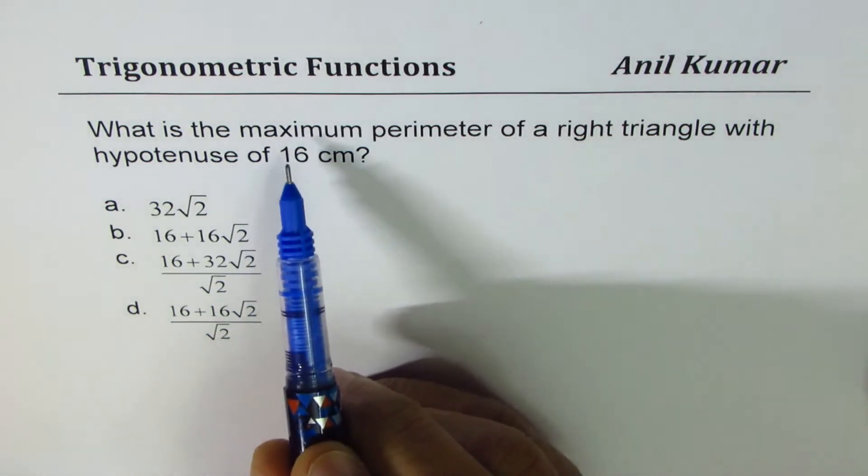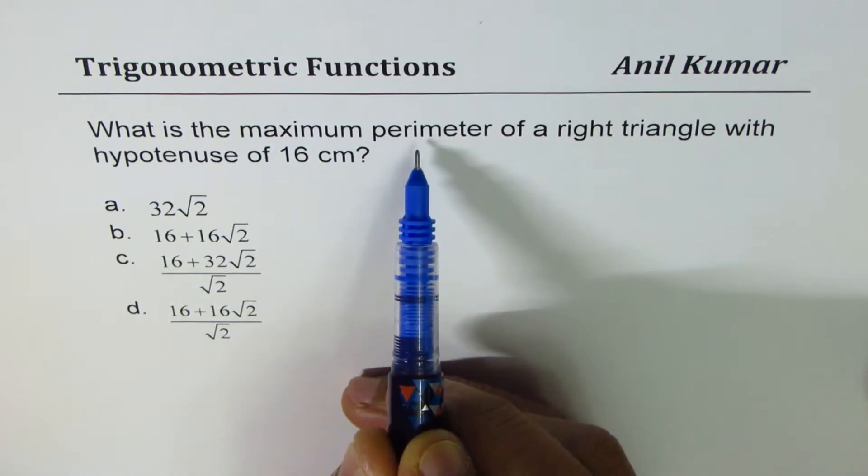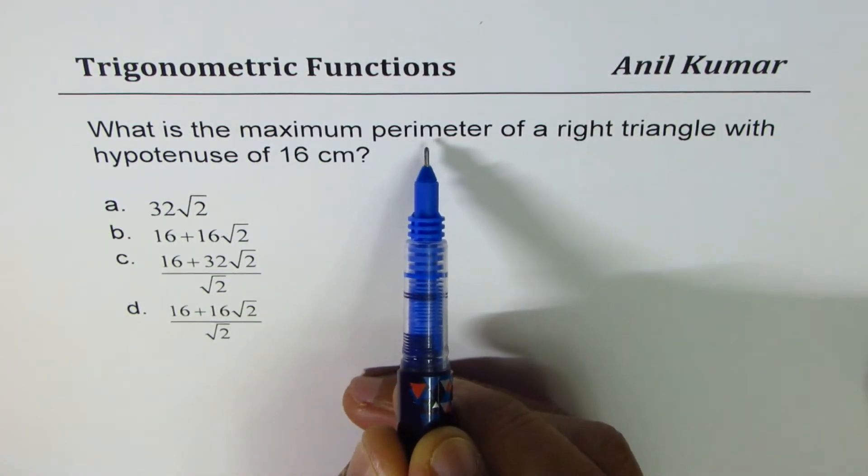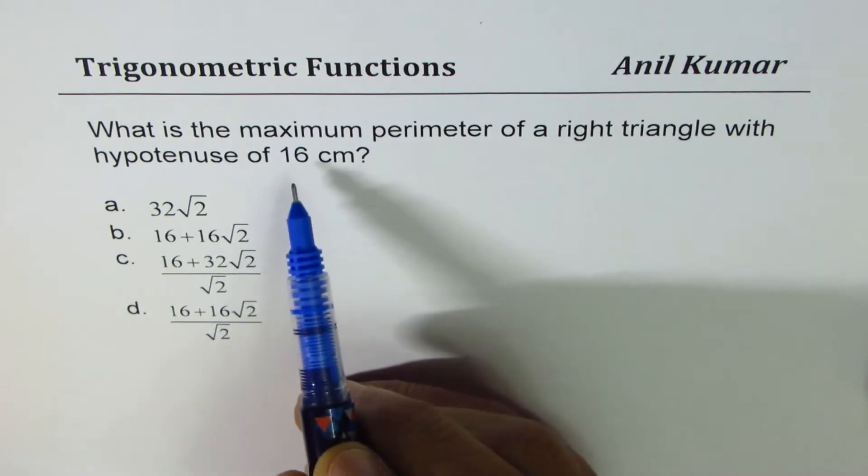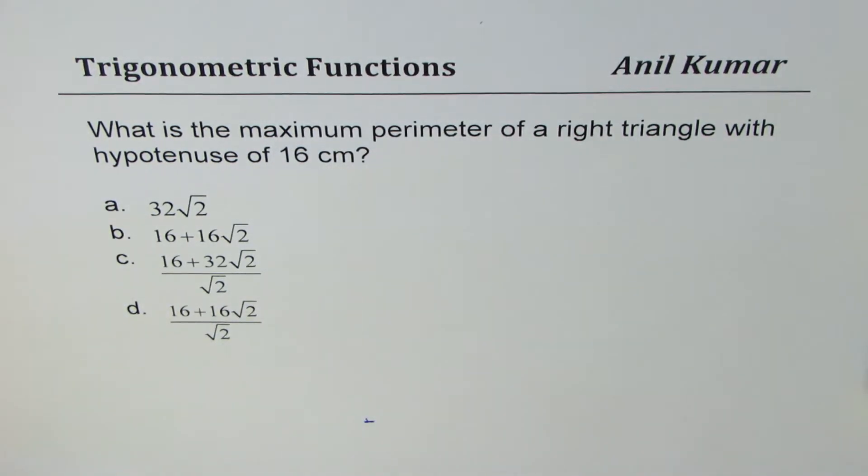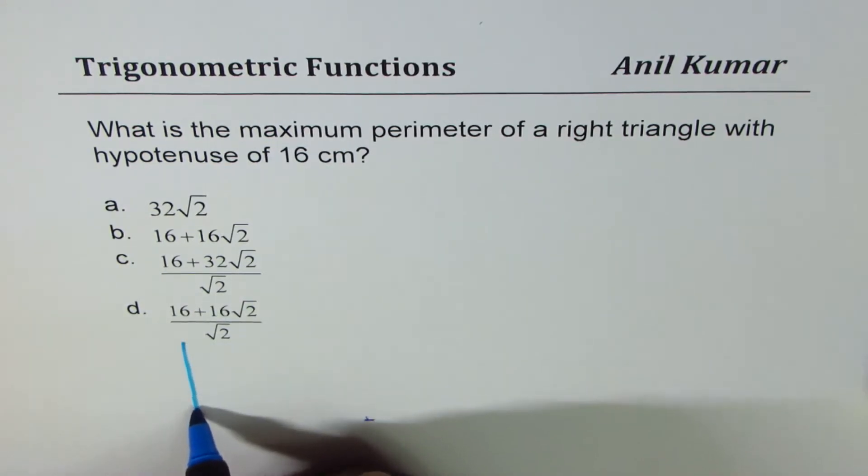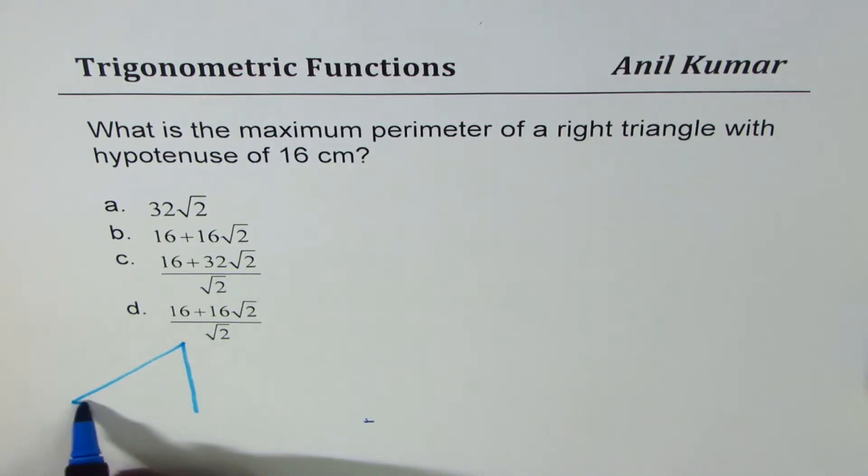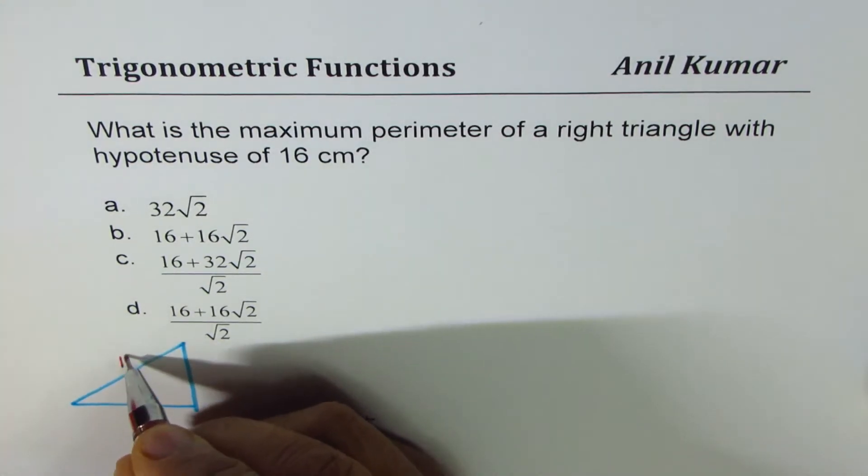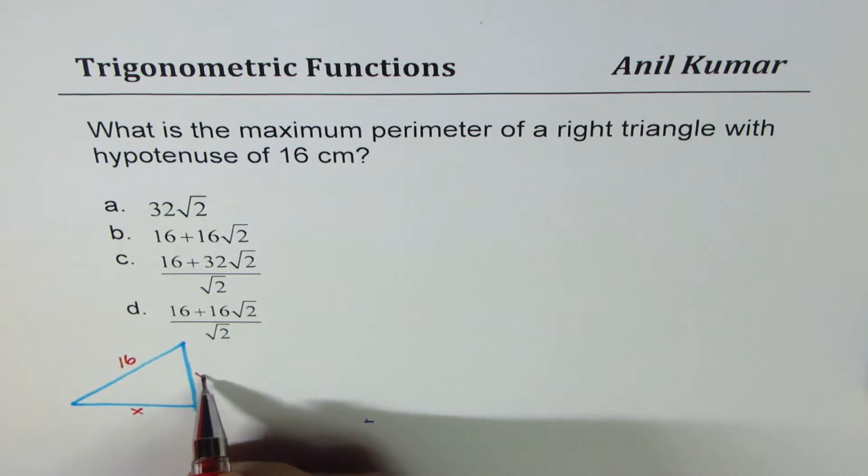Since we need to find the maximum perimeter, we need to write an equation of perimeter related with the triangle with 16 as the hypotenuse. Let me make one triangle here with 16 hypotenuse and then we will further discuss.